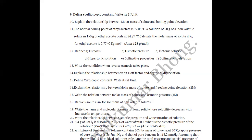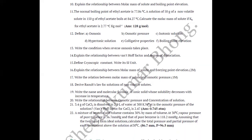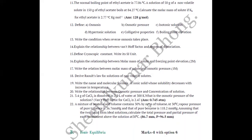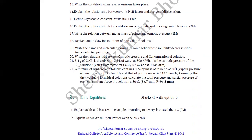Question 20: Write the relationship between osmotic pressure and concentration of a solution — may be asked for two marks. Question 21: 3.4 grams of CaCl₂ (calcium chloride) is dissolved in 2.5 liters of water at 300 K. What is the osmotic pressure of the solution? The van't Hoff factor for calcium chloride is given as 2.47. The answer is 0.745 atmospheres.